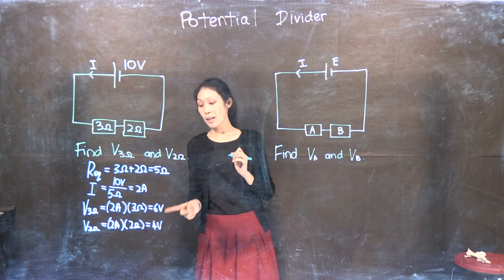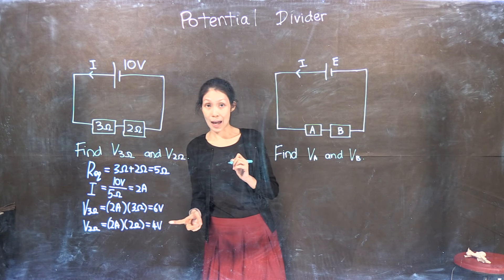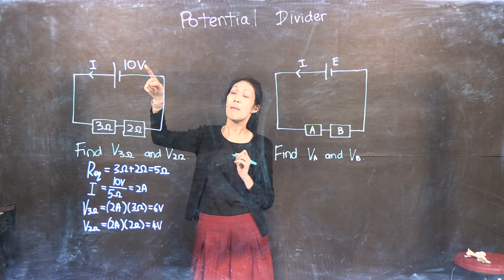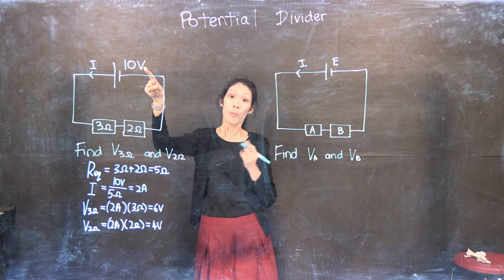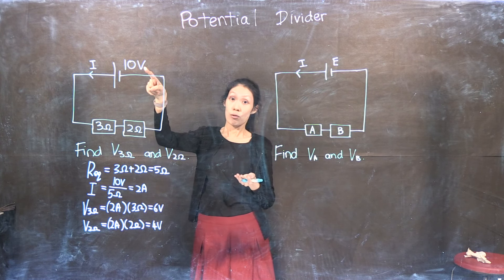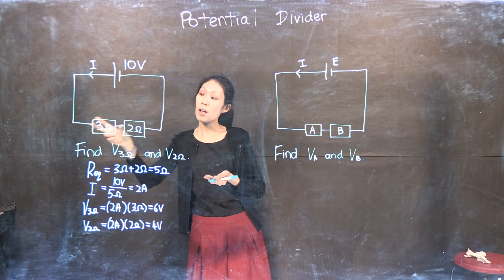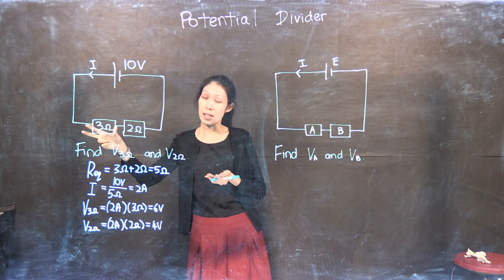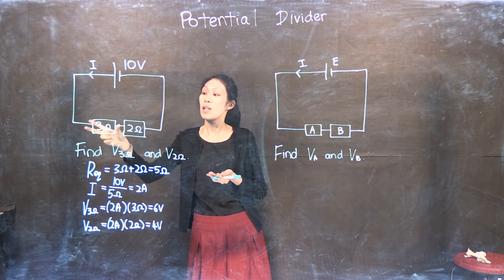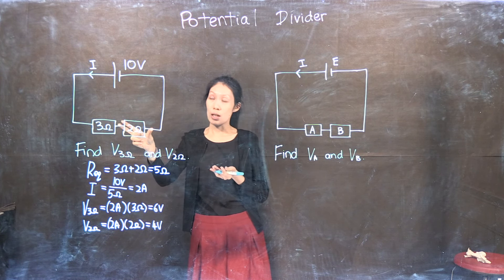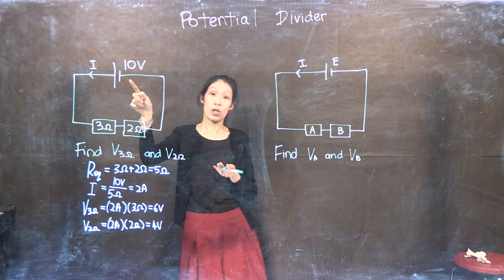Now you look at these two values and you notice that they add up to give you the EMF of the source, which should be correct — because the potential difference across each of these resistors should add up to give you the EMF of the source.